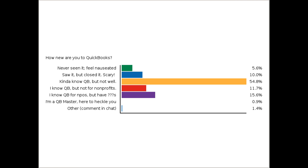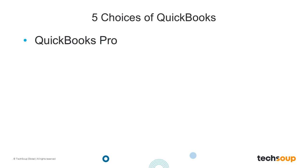The first thing Greg wants to cover is the different choices available if you're going to get QuickBooks. Some can be obtained at TechSoup, some cannot — he wants to go over all of them and then tell attendees what he thinks is the best for nonprofits. There are five choices of QuickBooks.